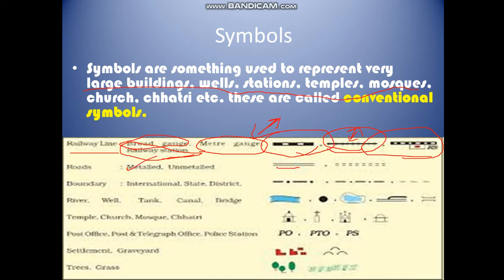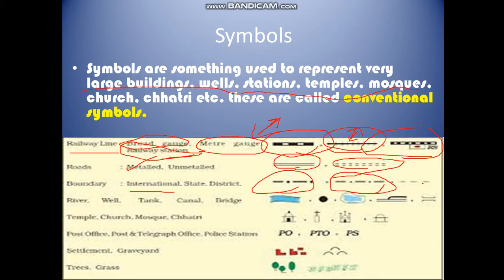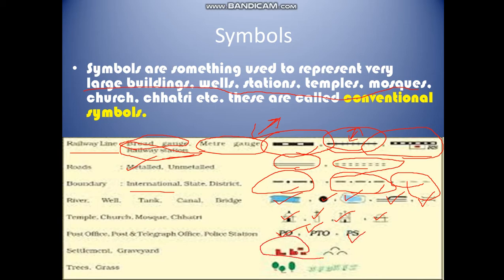For metal roads there is a specific sign, and for even metal roads there is another sign. For international boundaries this is the boundary line, for state boundaries this is the boundary line, and for district boundaries this is the sign. For the river, well, tank, canal and bridge there are corresponding symbols. This is a temple, this is a church, this is a mosque and this is a chatri. Then there are symbols for the post office, post and telegraph office, police station, settlement like houses, graveyard, trees and graves.